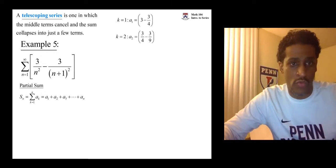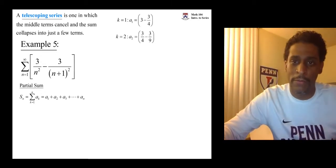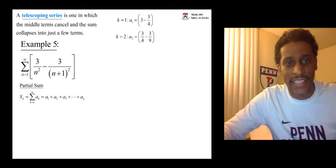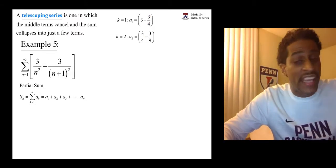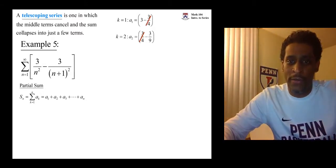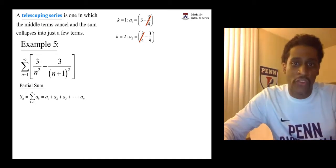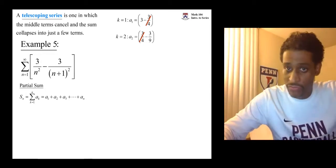And so what we have right away after two terms, we have cancellation starting. We have the negative 3 fourths from the k equals 1 term and the positive 3 fourths from the k equals 2 term. They cancel.